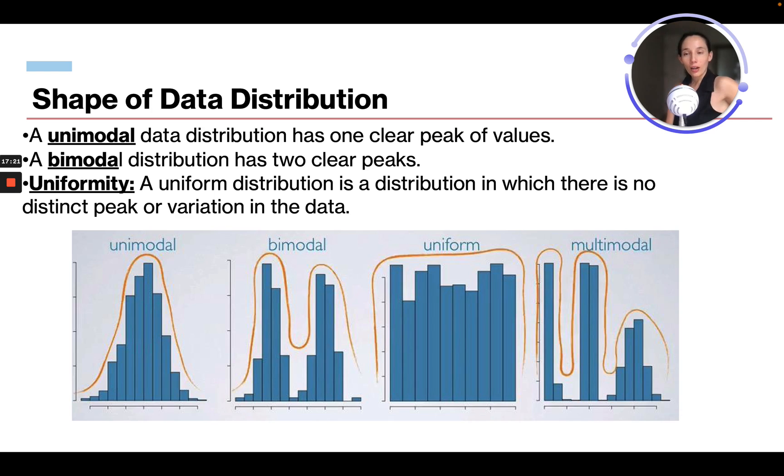So let's talk quickly about data distribution. A unimodal data distribution has one clear peak of value. Remember our histogram right here? This is a unimodal. Then there's something called a bimodal distribution. The way you can remember this is bi means two. So this has two peaks. There's also uniformity. A uniformity distribution is a distribution in which there's no distinct peak. Think uniform - everything's the same. There's no distinct peak. Then multimodal, you're going to have multiple different peaks in your histograms.